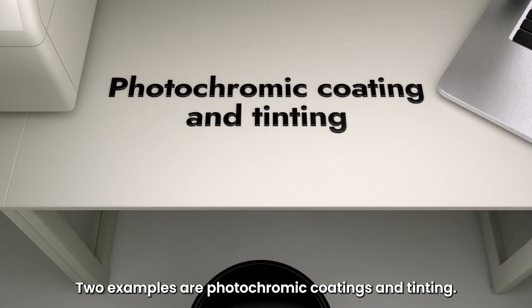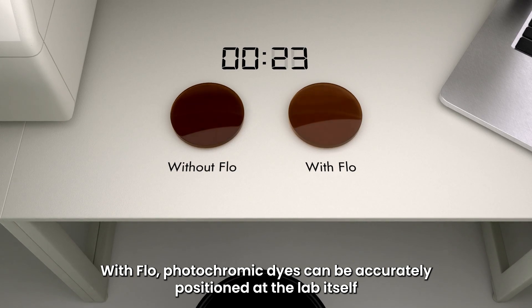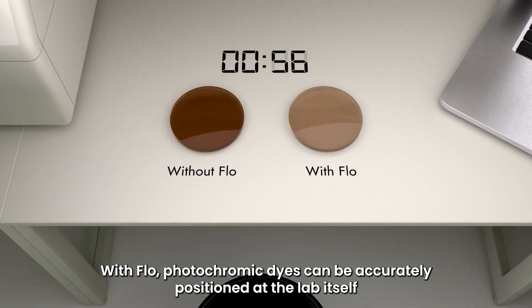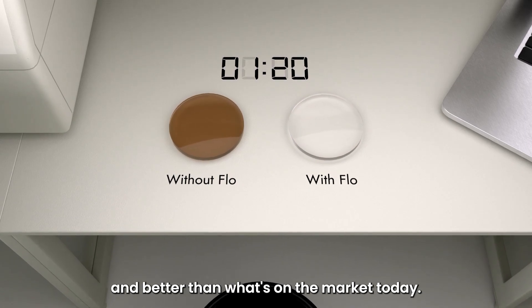Two examples are photochromic coatings and tinting. With Flow, photochromic dyes can be accurately positioned at the lab itself to create a photochromic lens that's cheaper and better than what's on the market today.